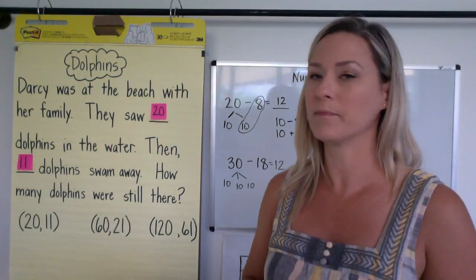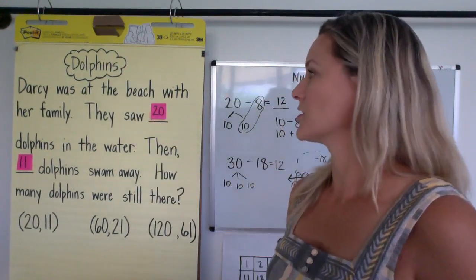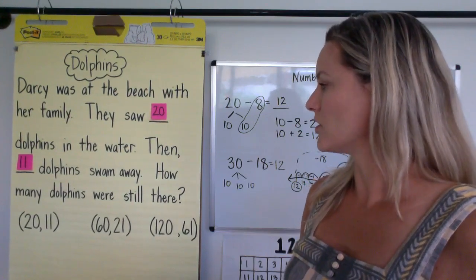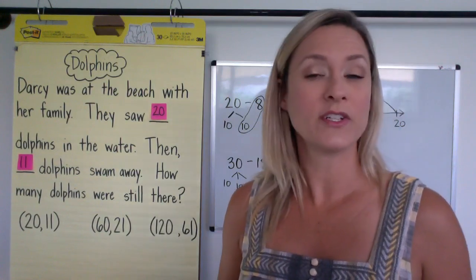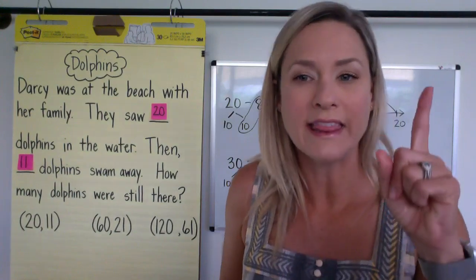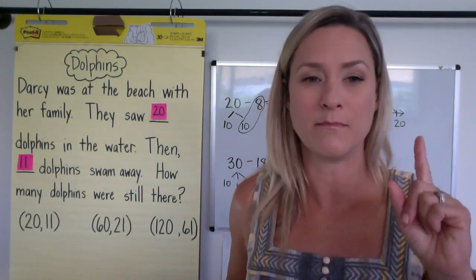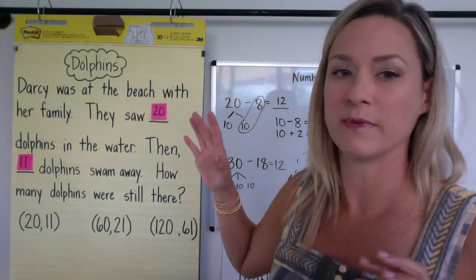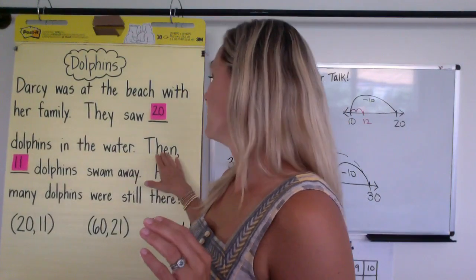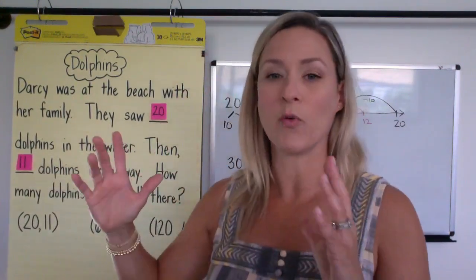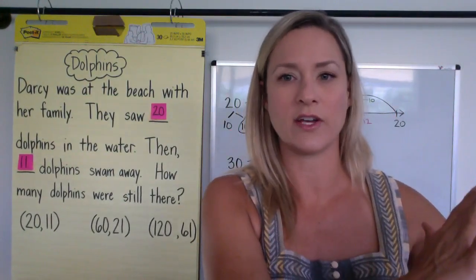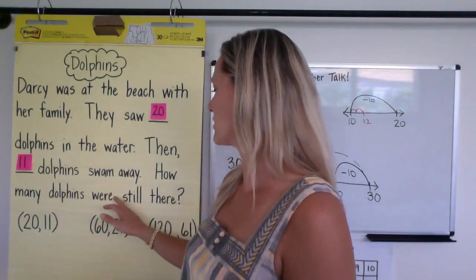And then we're going to go into the story problem about dolphins. So Darcy was at the beach with her family. They saw 20 dolphins in the water. Then 11 dolphins swam away. Remember, we are not telling our children this is a subtraction problem, here's what to do. They can imagine this in their minds. They can make a picture in their minds. So they saw 20, they can imagine that. Then they can imagine dolphins swimming away. That's the act of removal, so they know to take off, so they know that that's subtraction. How many dolphins were still there?